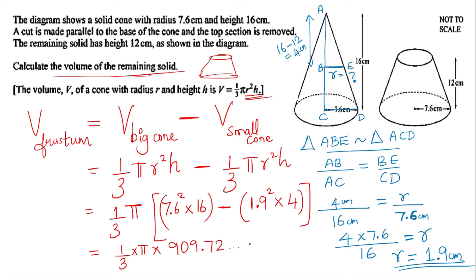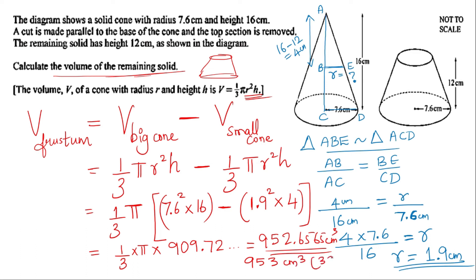The final answer from the calculator is 952.6565. We need the answer to 3 significant figures, so the volume will be 953 centimeters cubed to 3SF. This is the volume, which is your final answer.